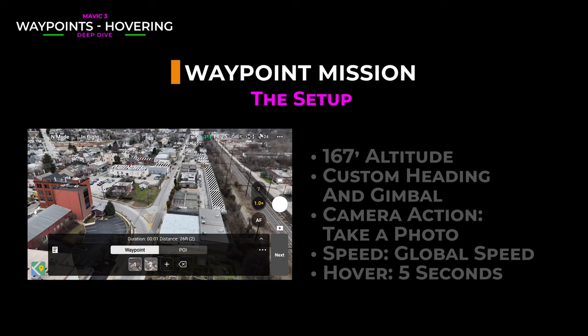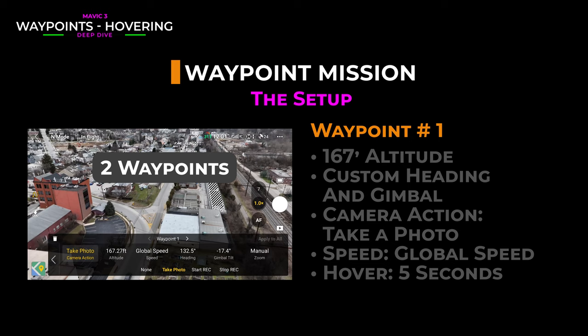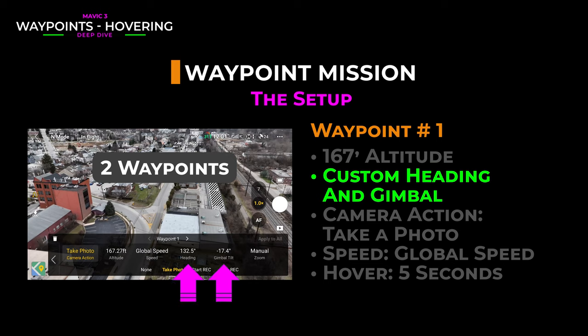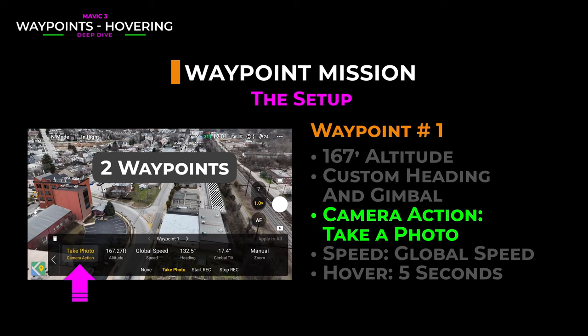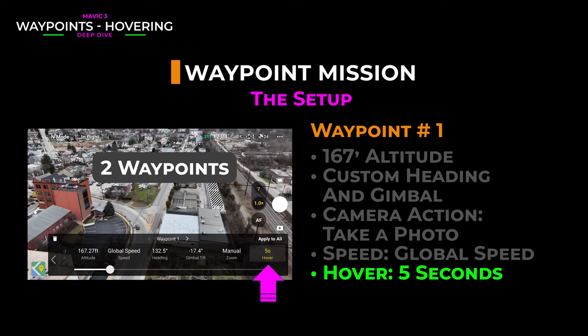Here's the setup. Our mission has two waypoints. The first waypoint has an altitude set at about 167 feet. We're not using point of interest — we have a custom heading and gimbal set. It's pointed at an open field where an apartment complex is going to be built. There's a camera action set to take a photo, and the speed is set to global speed. And of course, we have hover set to five seconds.